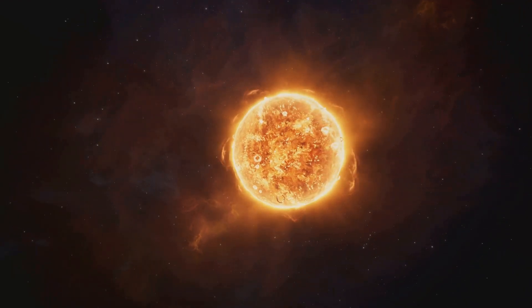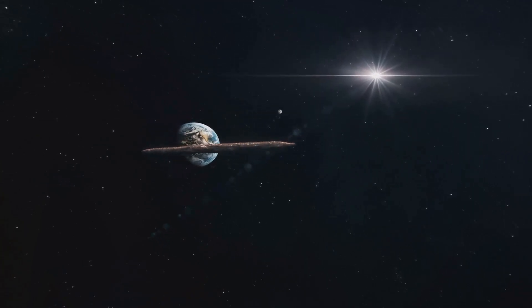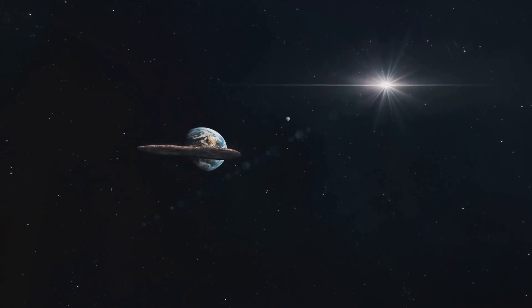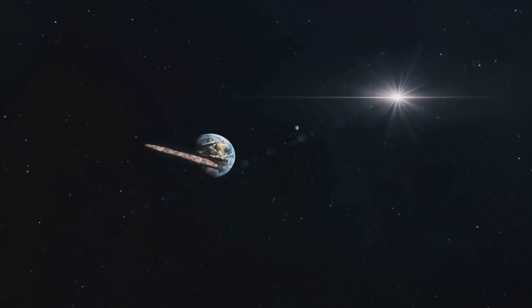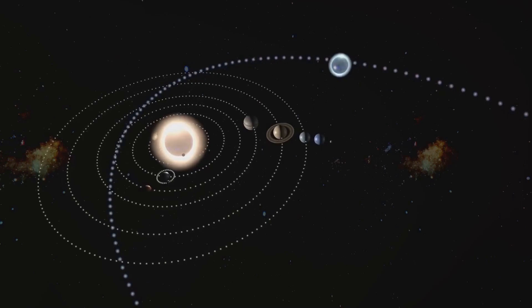But what implications would a second sun have for Earth? Well, according to the Nemesis star theory, every 26 million years, Nemesis passes through a cloud of comets at the edge of the solar system, known as the Oort cloud.